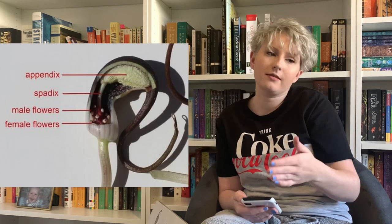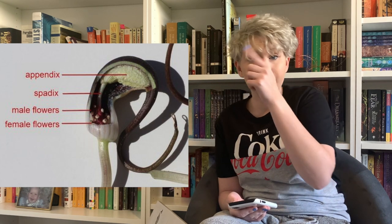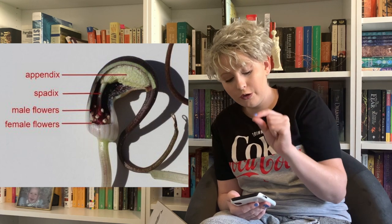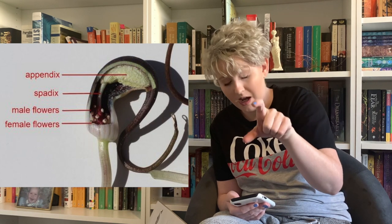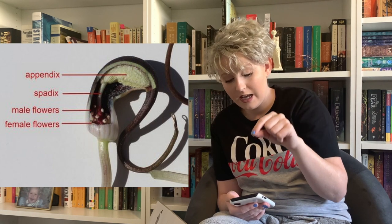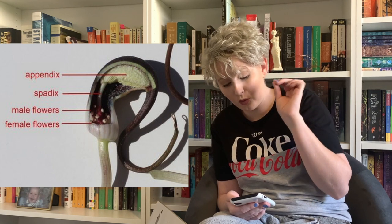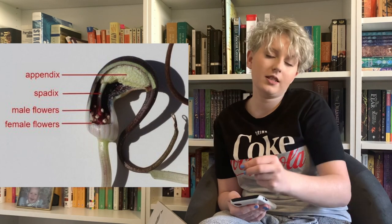In order to fully appreciate the inflorescence of Arisarum proboscideum, you need to cut away one side, because then you'll see a crooked spadix. It has a few female flowers at the base and a larger number of male flowers above. Fitting exactly into the hood of the spathe is a white spongy appendix — a perfect replica of the underside of a fungus.